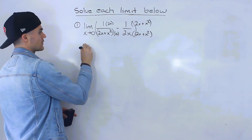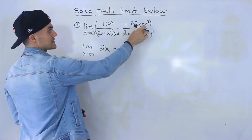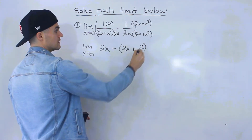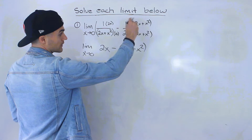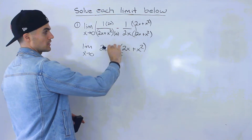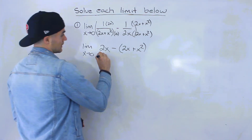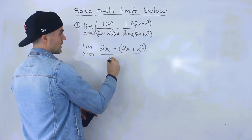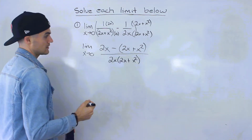We'll end up with the limit as x approaches zero of 2x up top minus one times the entire second expression — we have to subtract that entire expression, so keep it in brackets. This bracket is crucial because we're subtracting the whole numerator. If you don't put a bracket there, you won't distribute the negative to the x squared. The denominator becomes 2x times 2x plus x squared.